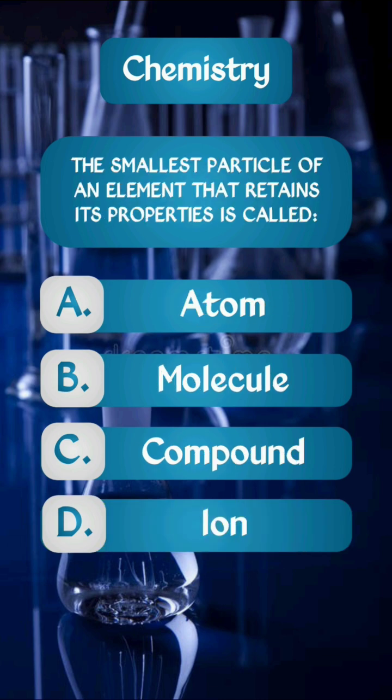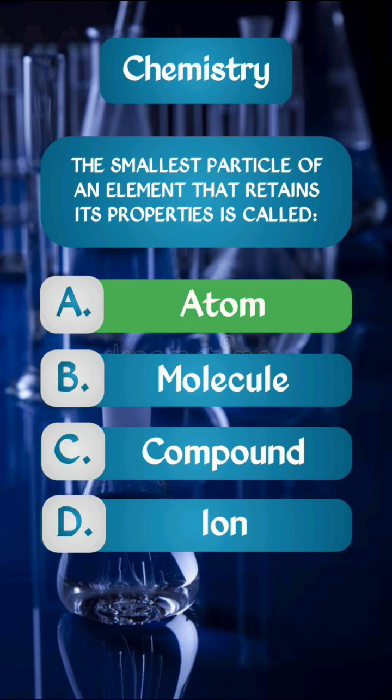Question 3. The smallest particle of an element that retains its properties is called... The right answer is option A: Atom.